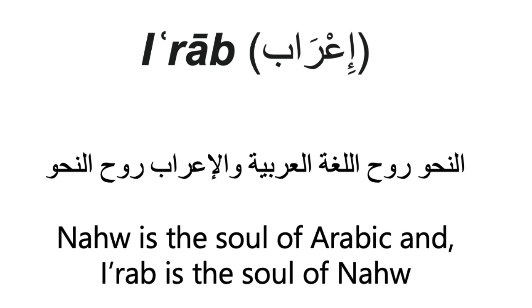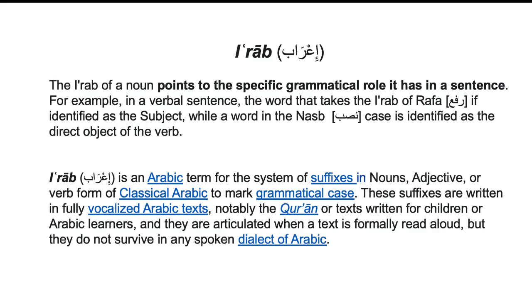When it comes to Quranic Arabic, there is hardly any difference of opinion that I'rab must be taken very seriously, particularly if you are a non-native Arabic speaker. Let's look at a scenario: how one sentence in Arabic without I'rab or any haraka can be extremely difficult to interpret its meaning. First of all, what is I'rab? The I'rab of a noun points to the specific grammatical role it has in a sentence. For example, in a verbal sentence, the word takes the I'rab of Rafa if identified as the subject, while a word in the nasab form is identified as the direct object of the verb.